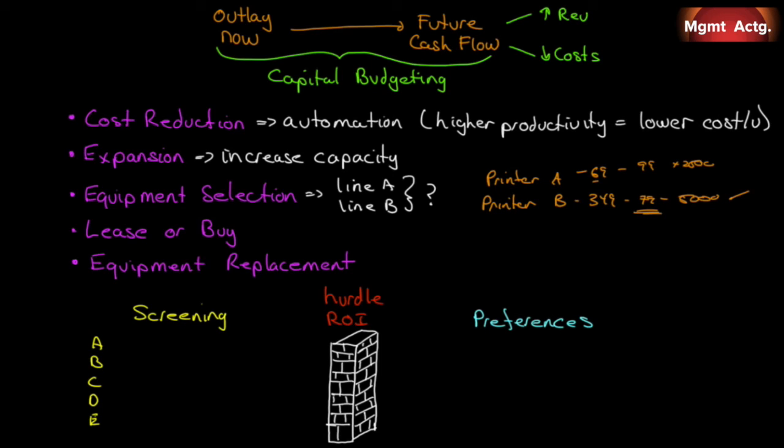So capital budgeting, or corporate finance, really, or selecting projects, really is a two-part process. There's the screening process and there's the preferences process. And in the middle, there's a big brick wall called the hurdle return on investment, which means a product has to provide a certain minimum return on investment. Otherwise, don't do it.